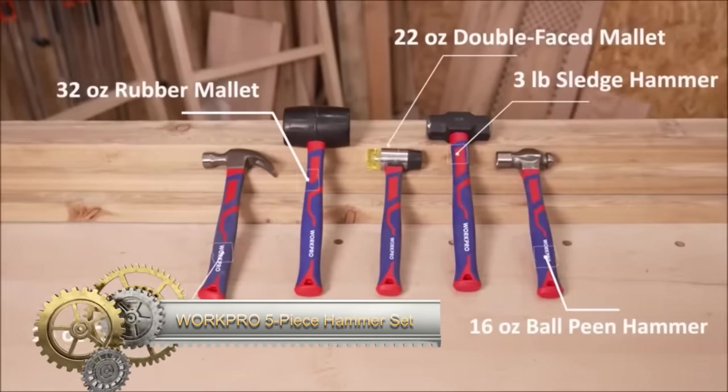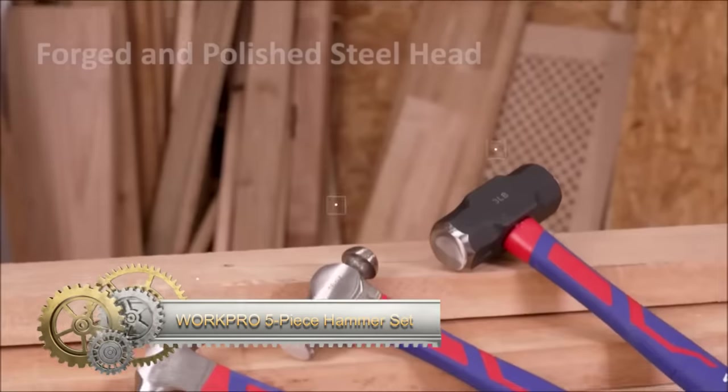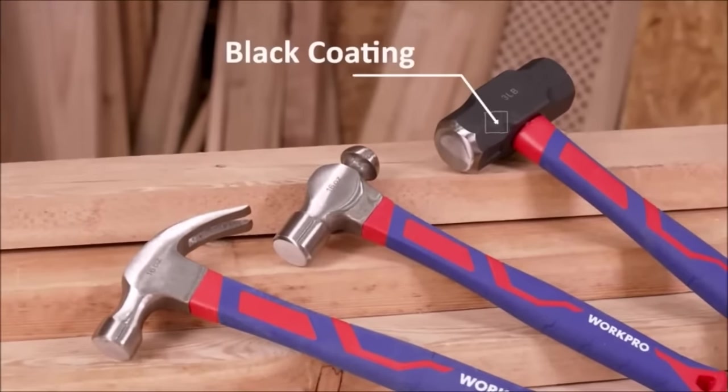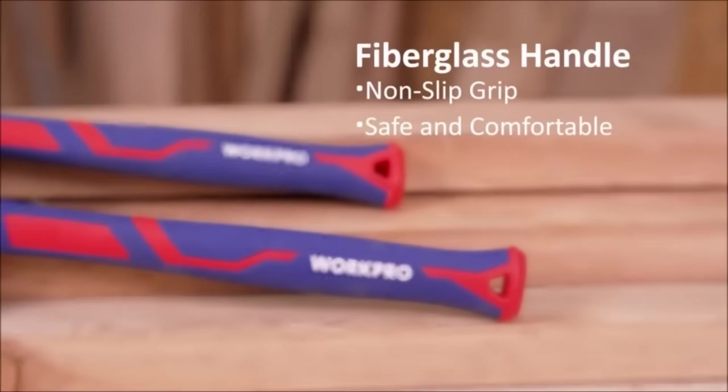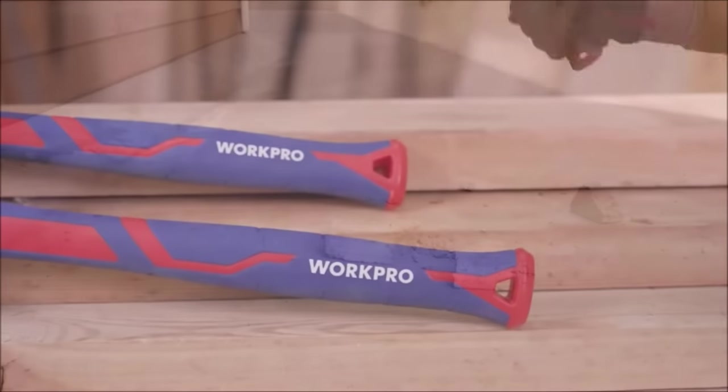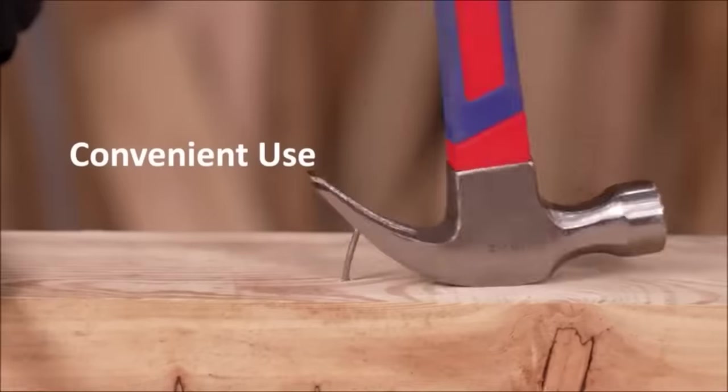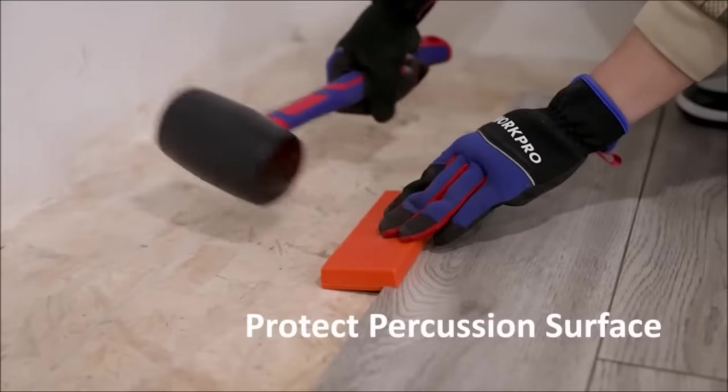The WorkPro 5-Piece Hammer Set offers exceptional value with a versatile assortment of hammers suitable for tasks like demolition, carpentry, and metalworking. This comprehensive set includes the following hammers: a 32-ounce rubber mallet for demolition work, a 16-ounce claw hammer for various tasks including driving and removing nails, and a heavy-duty 3-pound sledgehammer ideal for concrete work.